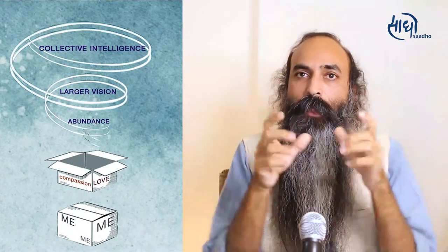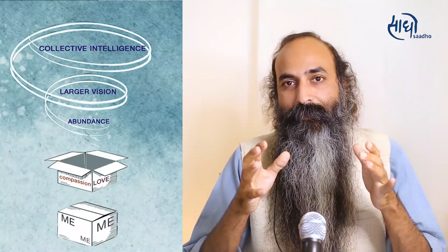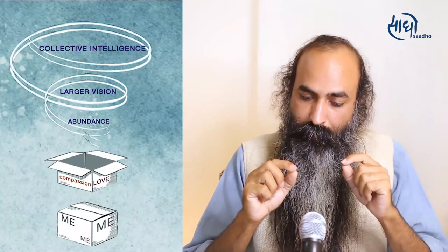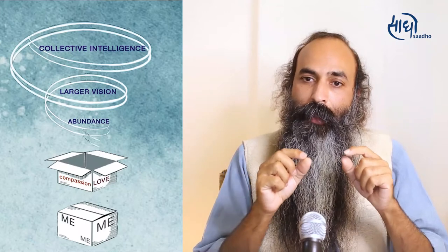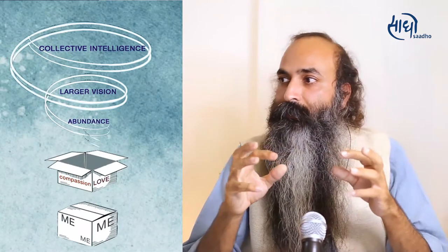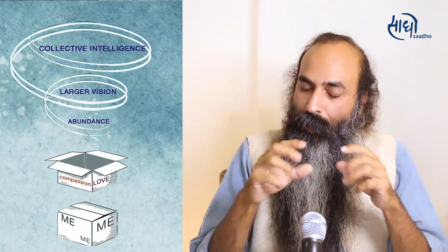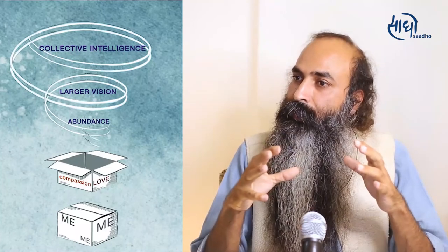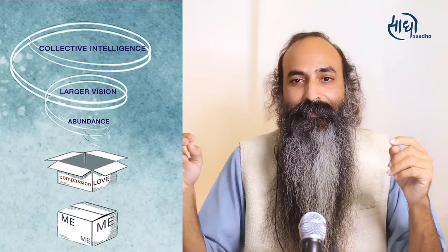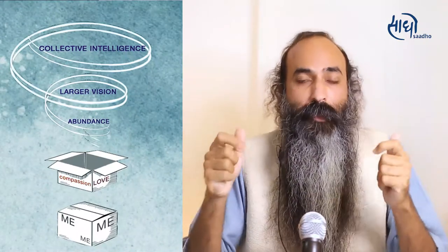Then the view of this 'me' starts to expand a little. When the view of this 'me' expands, our expression starts to come from identifying with people and objects. Earlier it was from the space of fear and insecurity — now the 'me' expands itself and starts to identify with people and objects.